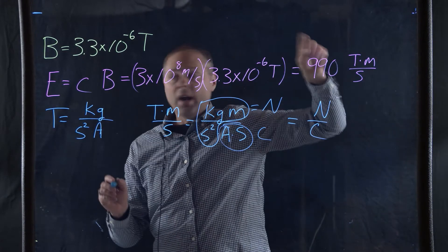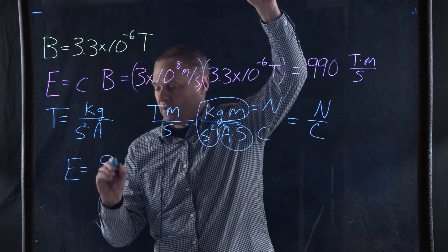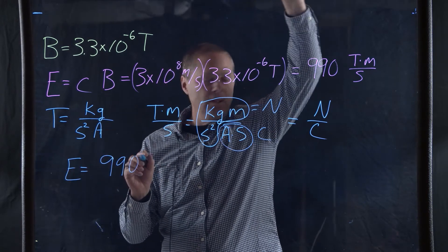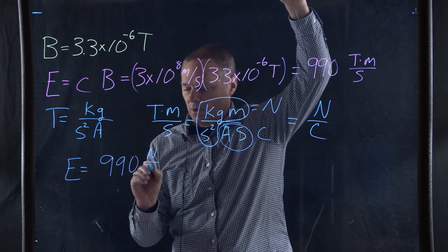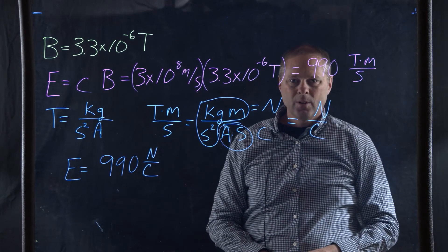So now our answer of the electric field is equal to 990 Newtons per Coulomb.